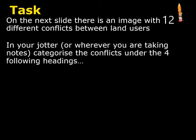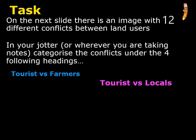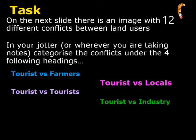Your task on the next slide: there's an image with 13 different conflicts between different land users. In your jotter, categorise the conflicts under four headings: tourists versus farmers; tourists versus locals — people that live nearby that are not farmers; tourists versus tourists — for example, hill walkers might conflict with people riding horses, or people wanting a relaxing beach experience might conflict with louder visitors; and tourists versus industry, which includes renewable energy like wind turbines and hydroelectric.